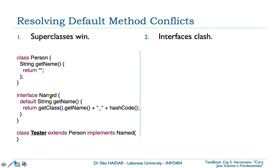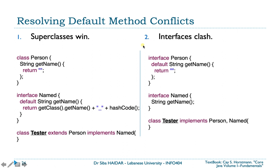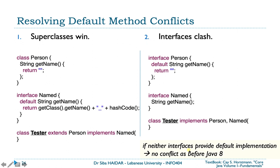For example, suppose class Tester extends Person and implements Named. Person provides an implementation for getName() returning an empty string, and the interface Named also provides a default implementation for getName() returning some string. Here the superclass wins: the default implementation in the Named interface is ignored because Person is the superclass.